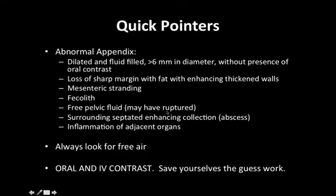Some quick pointers for an abnormal appendix: a dilated, fluid-filled appendix measuring greater than 6 millimeters without oral contrast in it; loss of a sharp margin with fat, with enhancing thickened walls; mesenteric stranding or fatty inflammation; presence of a fecolith — that round calcified object; free fluid within the pelvis, which may indicate a ruptured appendix; surrounding septated enhancing collection indicating an abscess; inflammation of adjacent organs. Remember to always look for free air. Oral and intravenous contrast should always be present.